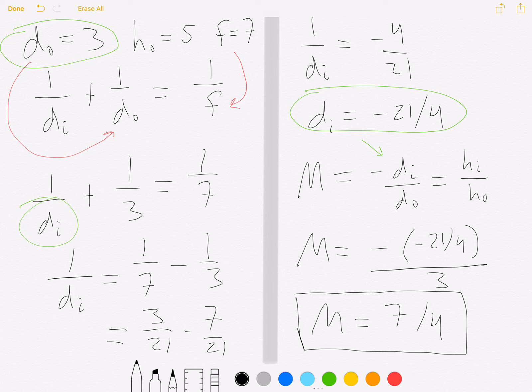Now let's remember that value and the fact that we have an object height of 5, and let's compute the image height.